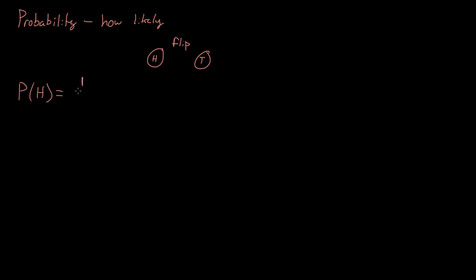Well, we want one outcome — heads facing up — out of a possible two outcomes. It could be either heads facing up or tails facing up. So the probability is one out of two, or simply 50%.